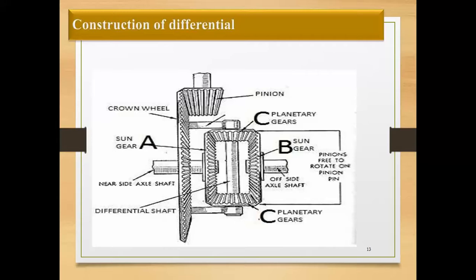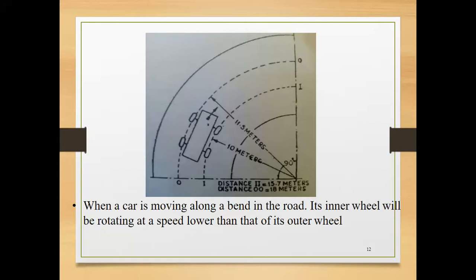A differential is a gear train with three shafts that has the property that the rotational speed of one shaft is the average of the speeds of the others, at a fixed multiple of the average. If we see the figure, the right side wheel is under the influence of rotation with the help of centripetal force. These wheels have to rotate less than the outer wheels; otherwise we are not able to move on a curved path. The speed or rotation or torque of the right side will get transferred to the left wheels and the left wheels will move faster than the right wheels, allowing us to move on a curved path.